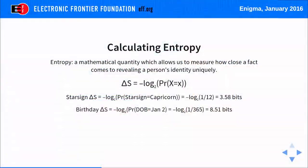You might notice that in this example, these are not actually independent facts. If you know someone is born on January 2nd, you already know they're a Capricorn, so you can't simply add up the bits to get 12 bits. The key takeaway is that the more entropy, the more uniqueness you have, and the less your privacy is.